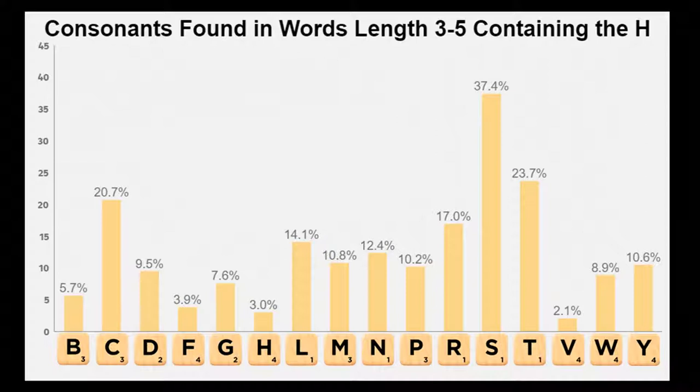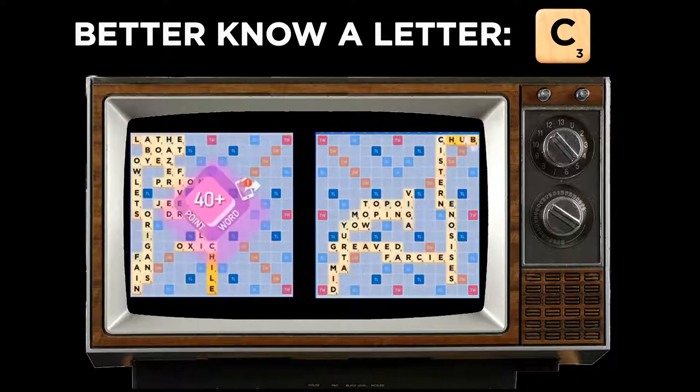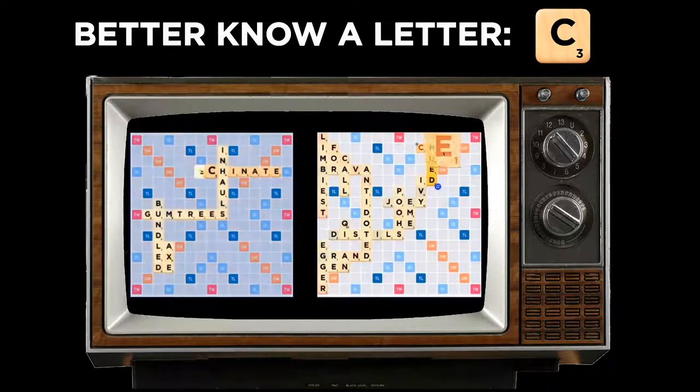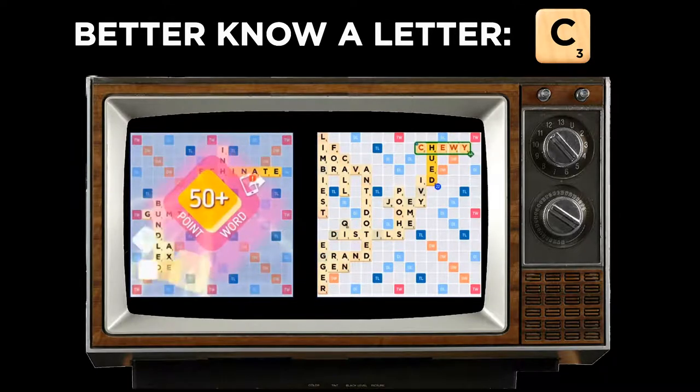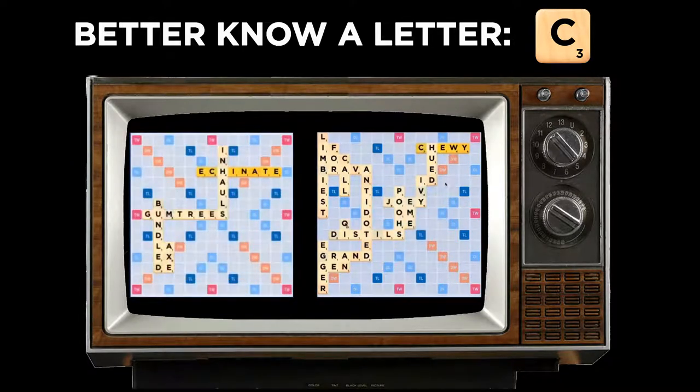But as we move on to words of three to five letters in length, you can see that the C and H show strong chemistry in shorter words as well. My episode on the C discussed this powerful combination at length. Not only does the C appear very frequently alongside the H in both long and short words, the two tiles together score a very solid seven points, a number that grows rapidly in conjunction with bonus squares.